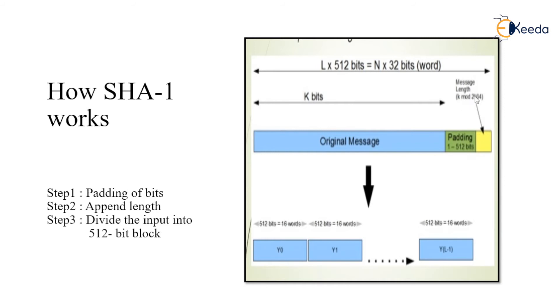Step 3 is divide the input into 512-bit blocks. Whatever the plaintext message we have when it is being appended, after appending the length, we divide the complete plaintext into 512-bit blocks. Here we can see Y0, Y1 till YL-1, which is then considered as 16 words.